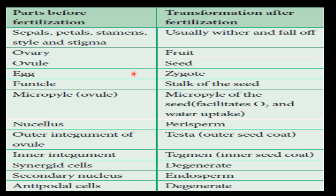The egg becomes the zygote, which develops into the embryo. The funicle, which connects the ovule to the placenta via the ovary wall, becomes the stalk of the seed. The micropyle of the ovule becomes the micropyle of the seed, through which oxygen and water enter to help in germination. The nucellus tissue becomes the perisperm — that is, material between the endosperm and the outer wall.